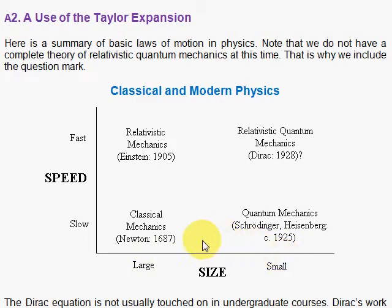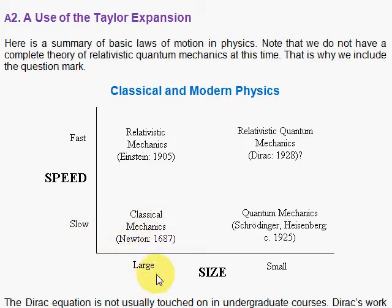The first physics that was understood was that discovered by Isaac Newton, and in his Principia published in 1687 he gave us the laws of classical mechanics. These laws are very powerful — summarized as F equals MA — and they apply to slow-moving macroscopic objects. If you can touch it, it's large: an apple, the ground, the earth. Microscopic is small — atoms, molecules.